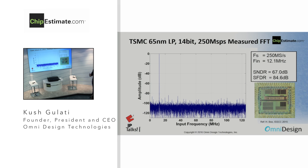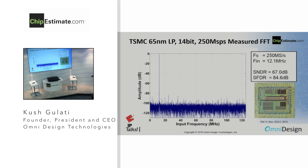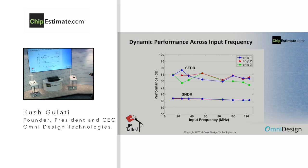This plot represents a fast Fourier transform of the data converter, built in 65 nm TSMC LP. At a sampling frequency of 250 MS/s and an input frequency of 12 MHz, we find that the signal-to-noise and distortion ratio is 67 dB and the spurious-free dynamic range is greater than 84 dB — very respectable numbers for this speed. When we increase the input frequency, we find that the SNDR remains essentially flat all the way from low to high input frequencies, meaning it has very robust performance across the Nyquist band. SFDR is also pretty respectable throughout that band.